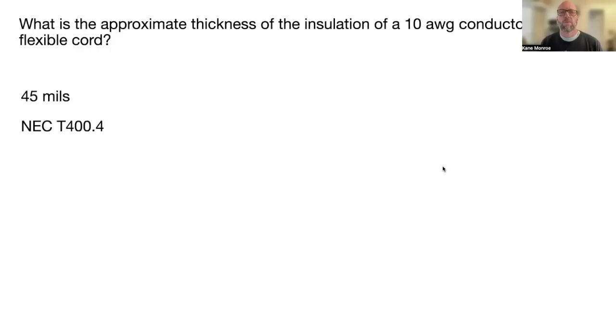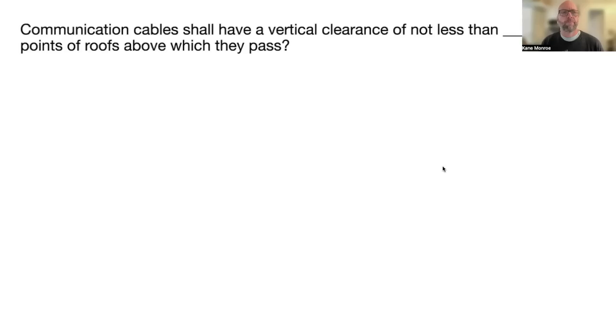Communication cables shall have a vertical clearance of not less than blank from all points of the roof above which they pass. Eight feet, and that's in 800.44b, so they gotta have that vertical clearance on that roof.